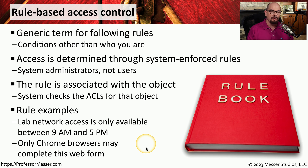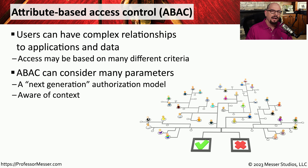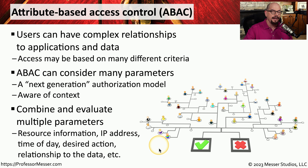Or the rule might be that a form on a web page can only be filled out by someone using the Chrome browser. This rule-based access control allows an administrator to set any type of criteria and associate that criteria with a specific object. A more modern style of access control is the attribute-based access control. With attribute-based access control, there are many different criteria you can use to determine whether someone would have access to data or not. This allows administrators to create very complex rule sets. You can think of this as a next generation authorization model — taking into account criteria such as the IP address of the person making the request, the time of day, the desired action whether they're writing or reading information, and what relationship they might have to the data. The administrator can combine many different criteria together to determine exactly what type of control someone might have over any object.